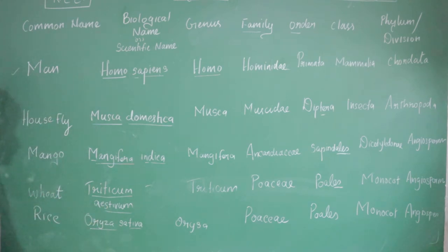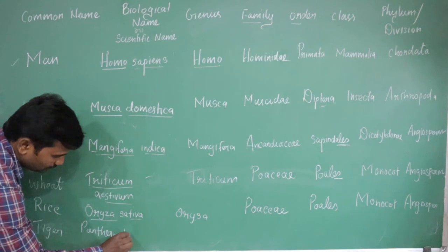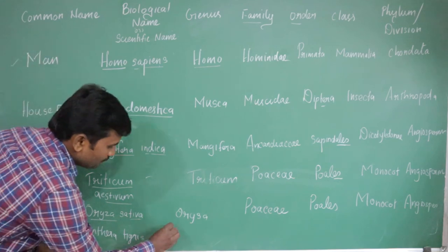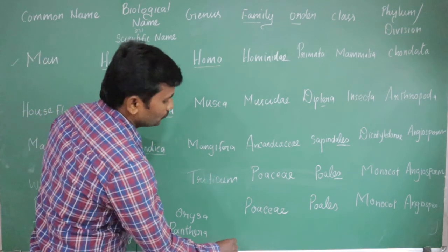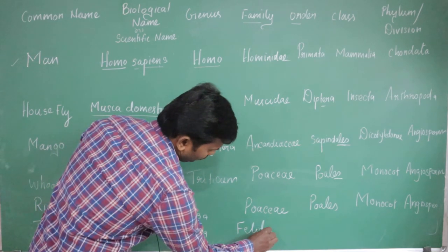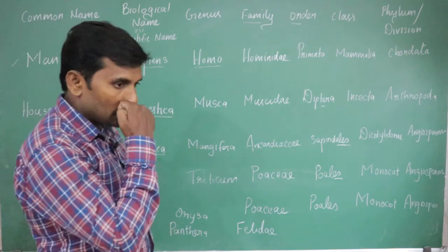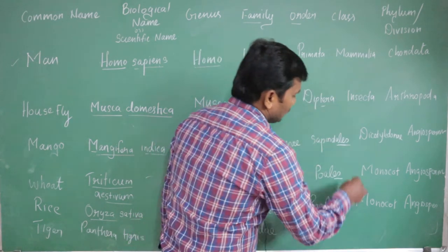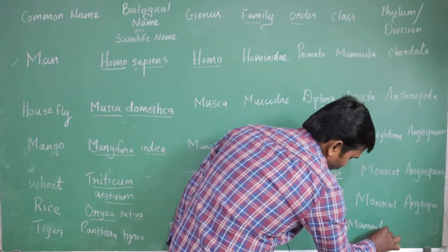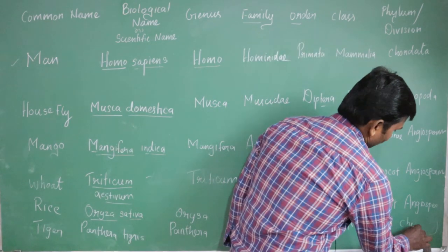One more example — tiger. The scientific name of tiger is Panthera tigris. The genus name is Panthera. The family is Felidae — very important. The class is Mammalia. The phylum is Chordata.